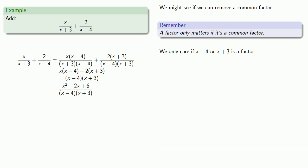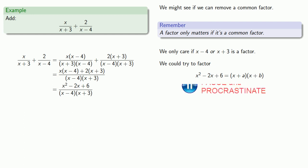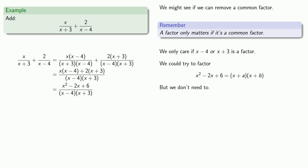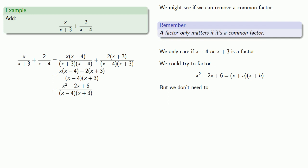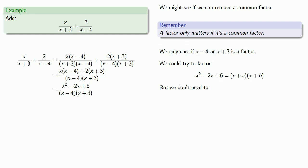Now we could try to factor x squared minus 2x plus 6 as x plus a times x plus b, but we don't need to. Remember that a factor only matters if it's a common factor, and we've already determined that neither of our possibilities for a common factor is actually a factor. And what that means is we can't simplify this expression any further, and we'll leave it alone.